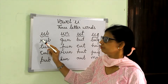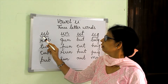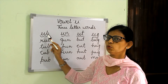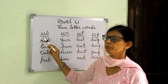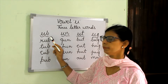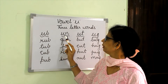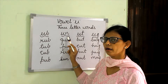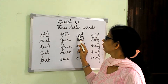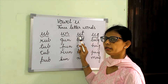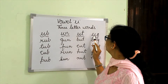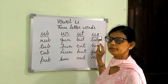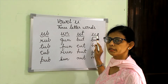Look at this. Here the ending sound is UB. Here the ending sound is UN. Here the ending sound is UT. And the last one — here the ending sound is UG.